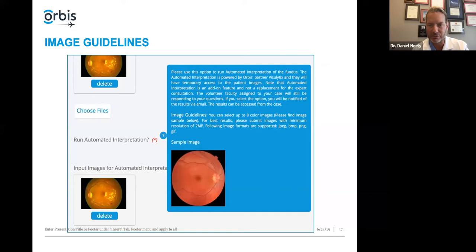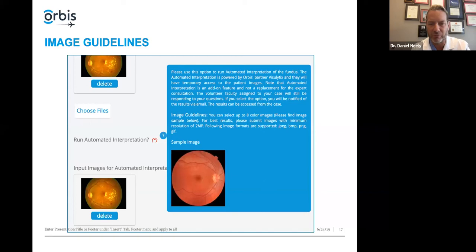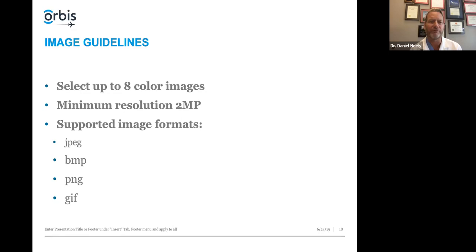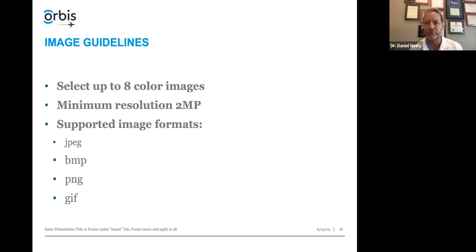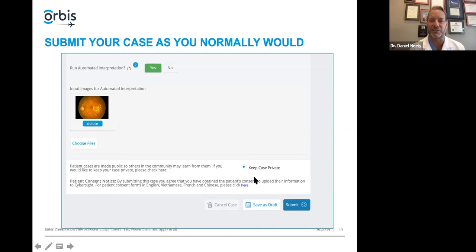Image guidelines specify the file formats — this works best in JPEG, bitmap, PNG, or GIF. You can attach up to eight images. While a left and right color fundus photo is most common, you may put up to eight images if you want multiple interpretations. The minimum resolution is two megapixels. Once the image has been uploaded, from there it's just submit as normal. I've selected case private for this demo, but under normal circumstances leave cases not private so everyone can learn from them once closed. That's one of the long-term benefits of building up this library of interesting cases.